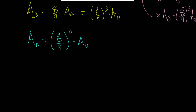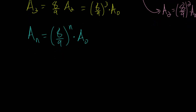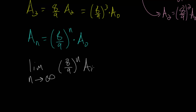When you raise eight ninths to higher and higher powers, the overall result becomes smaller and smaller — you can test this with a calculator. Going from step one to step two, we had eight ninths, then 64 over 81, which is smaller. Eight over nine to the third is 512 over 729, which is smaller still. The higher the exponent, the smaller the expression. Using the language of calculus, we're looking at the limit as n — the number of steps — goes towards infinity, to see what this expression approaches.